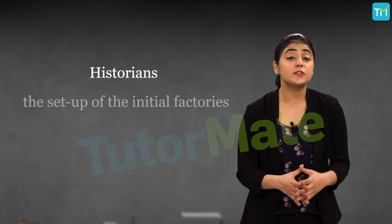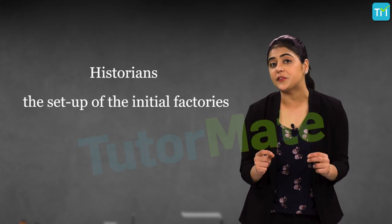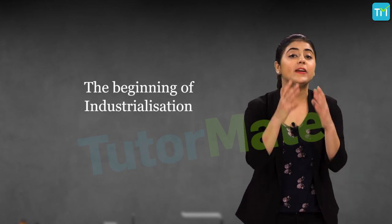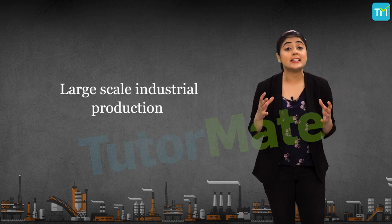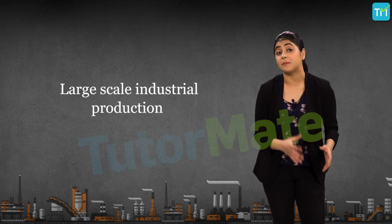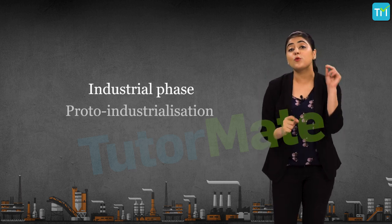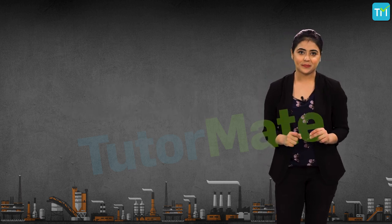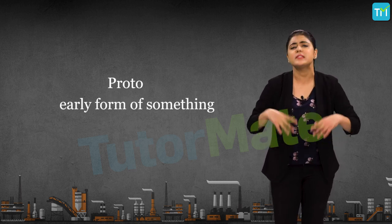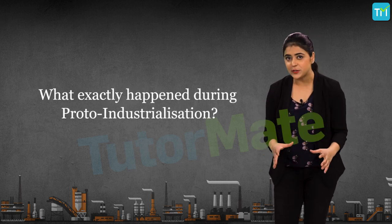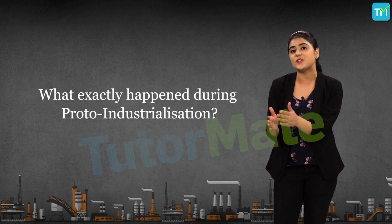Many historians refer to the setup of the initial factories in England and Europe as the beginning of industrialization. But as mentioned, there was a large-scale industrial production already in place, and that industrial phase is known as proto-industrialization. The word proto means the first or early form of something.